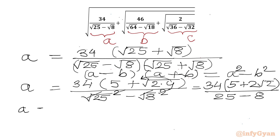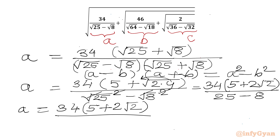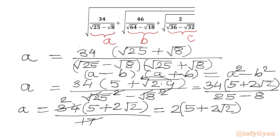So A equals 34 times (5 plus 2√2) over 17, which simplifies to 2 times (5 plus 2√2). So A equals 10 plus 4√2.